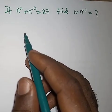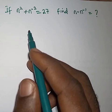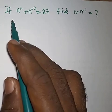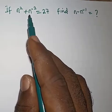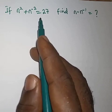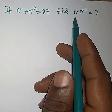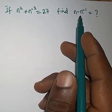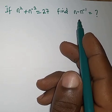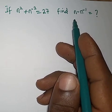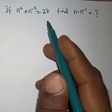Let's see how we are going to solve this problem here. The question says if n squared plus n to the power minus 2 equals 27, find n minus n to the power minus 1. So what is n minus n to the power minus 1 where you have this.